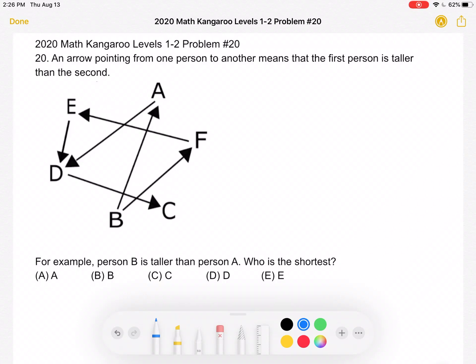This is the 2020 Math Kangaroo Levels 1-2 Problem number 20. An arrow pointing from one person to another means that the first person is taller than the second.